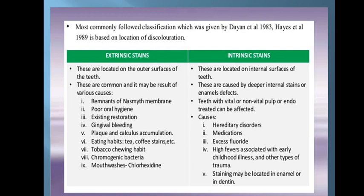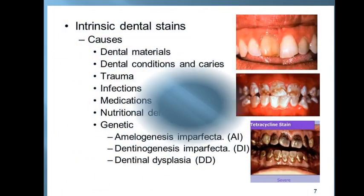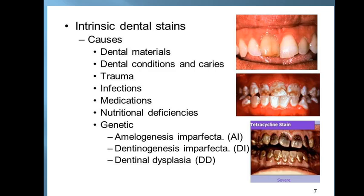Teeth with vital or non-vital pulp, or endodontically treated teeth, can be affected by intrinsic stains. The causes include hereditary disorders, medications like tetracycline which leads to discoloration, excess fluoride intake, high fevers associated with early childhood illness, and trauma. Staining can be located in the enamel or dentin.